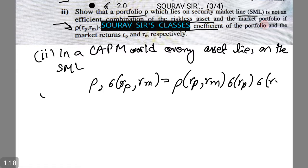Now it follows that βp,m = σ(Rp, Rm) / σ²Rm